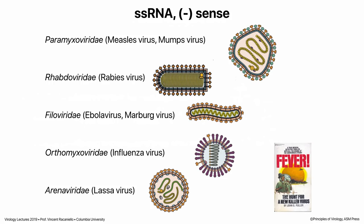That leaves us with minus-sense single-stranded RNA viruses. There are many: paramyxoviruses including measles and mumps, rabies virus, filoviruses like Ebola, and influenza virus — negative-stranded RNA in eight pieces, i.e., segmented. Also arena viruses, another segmented genome, like Lassa virus. Lassa virus was first discovered in the 1960s in Nigeria — captured in a wonderful book called Fever, which I read in college and is what made me want to be a virologist. When the minus RNA gets into a cell, it can't be translated, so all these viruses must package an RNA polymerase in their particles.